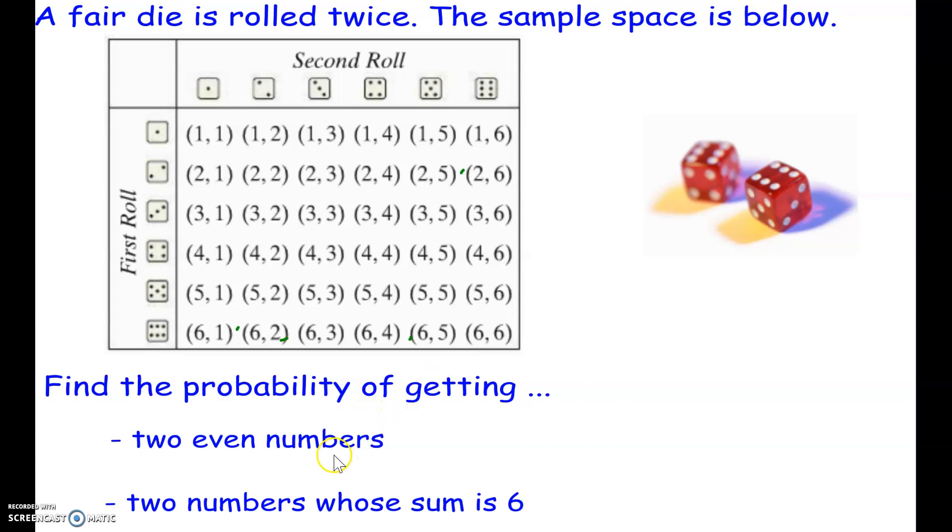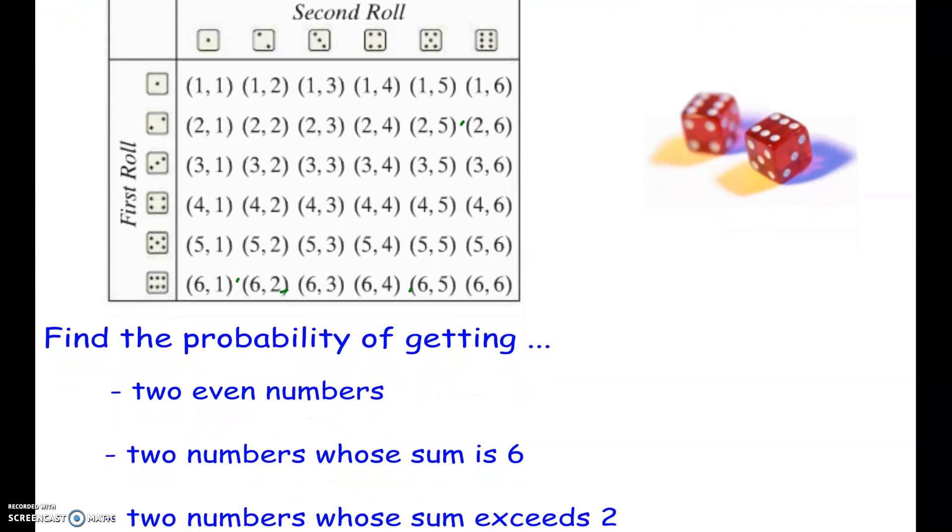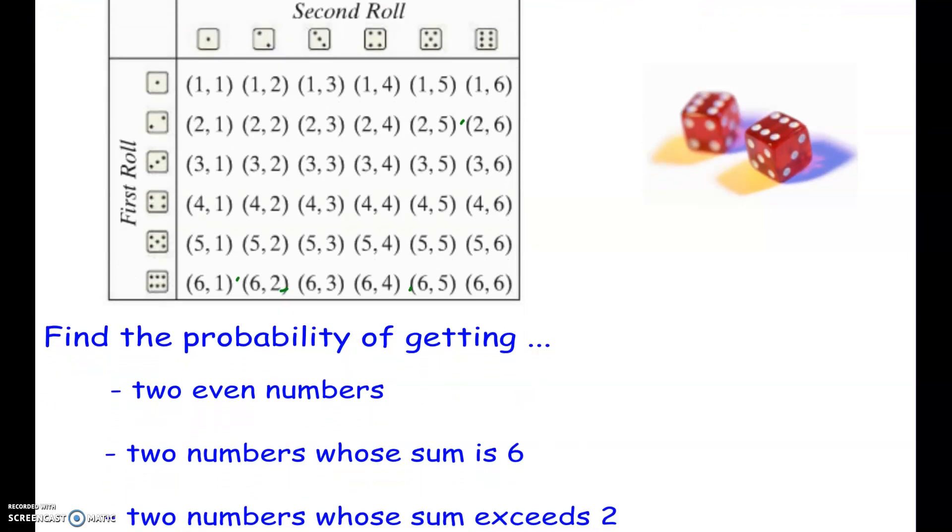Now that we know the sample space, we should be able to come up with the probabilities for certain events. The first one that we're asked to identify is, what's the probability of getting two even numbers? So if I want an even number, that means that it's a number like 2, 4, or 6, so we're going to be focusing in on this second column, the fourth column, and the sixth column. But we don't want everything in there, right? We only want the ones where both are even.